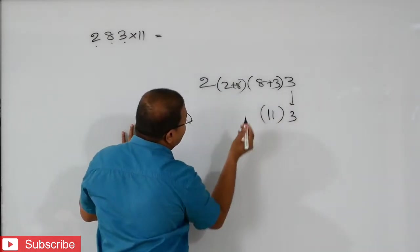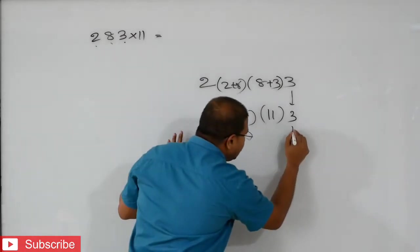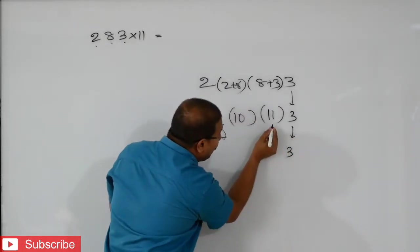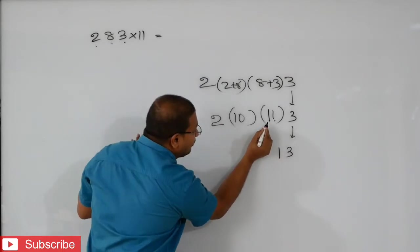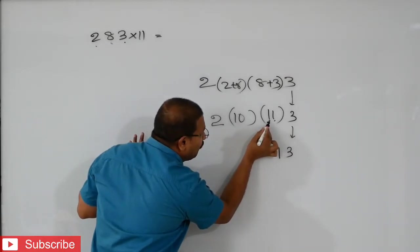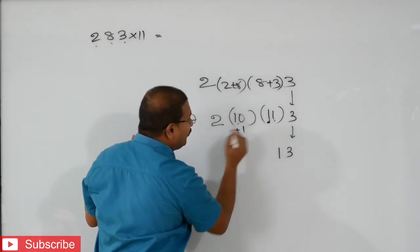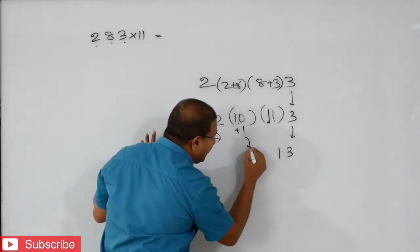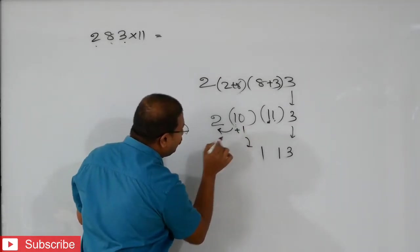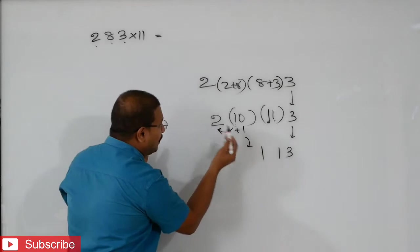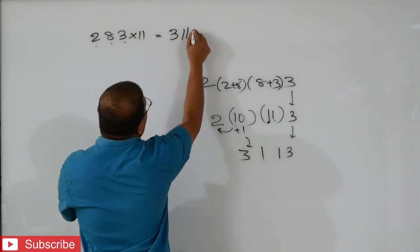After that, 2. Next step: 3 will write. Then 1 will write — from 11, only 1 will write. And the remainder 1, balance 1, will add to here. That means 10 plus 1 is 11. So we take only 1 here. After that, this 1 from 11 goes to here. That is 2 plus 1, 3. So the answer is 3, 1, 1, 3.